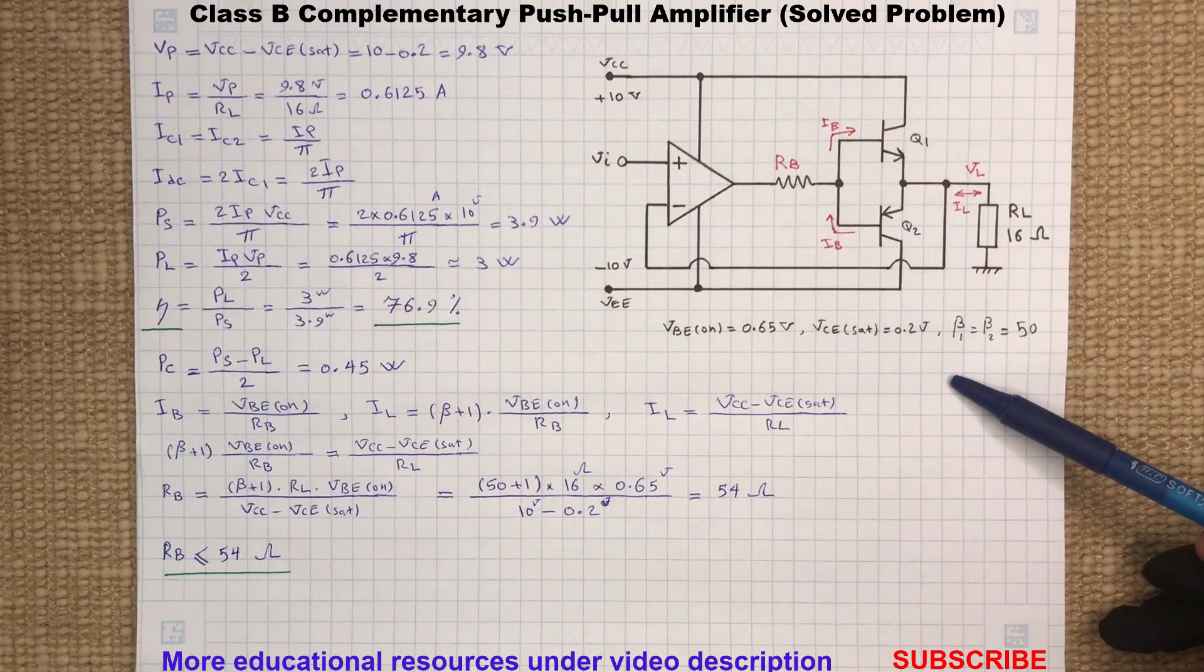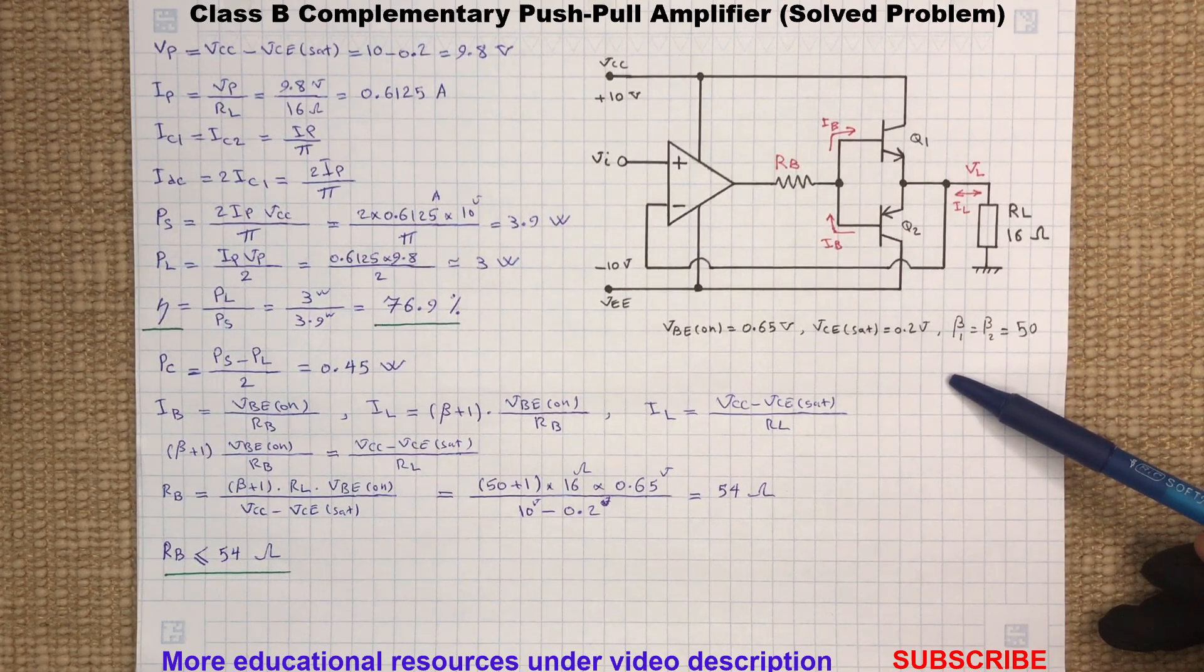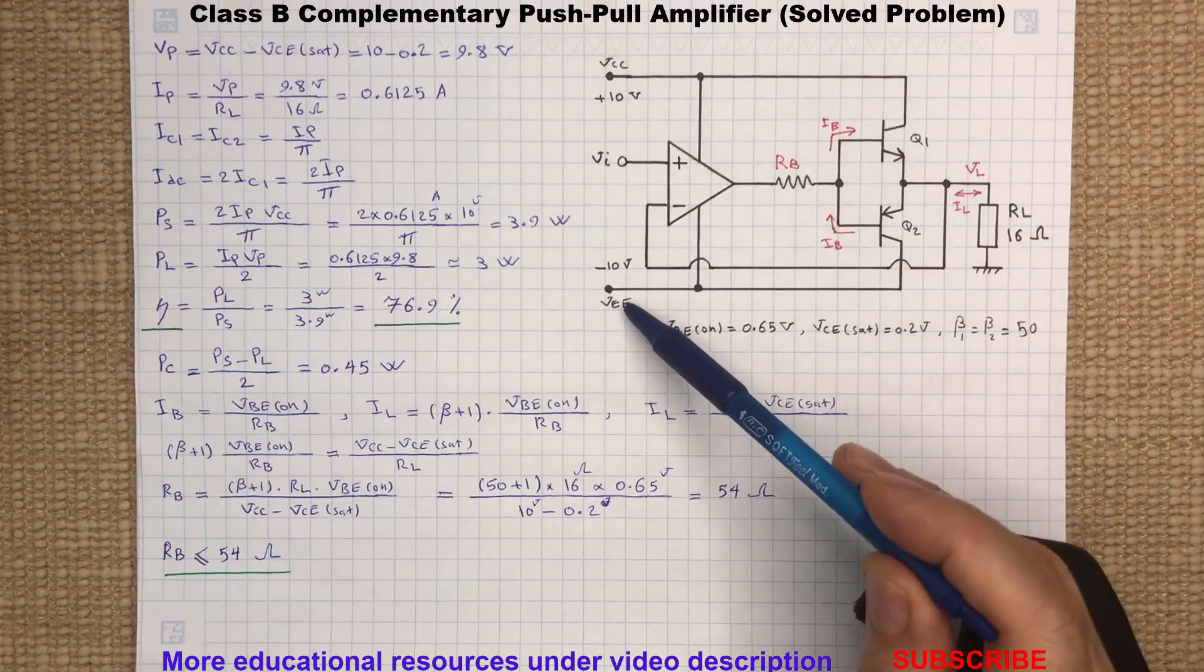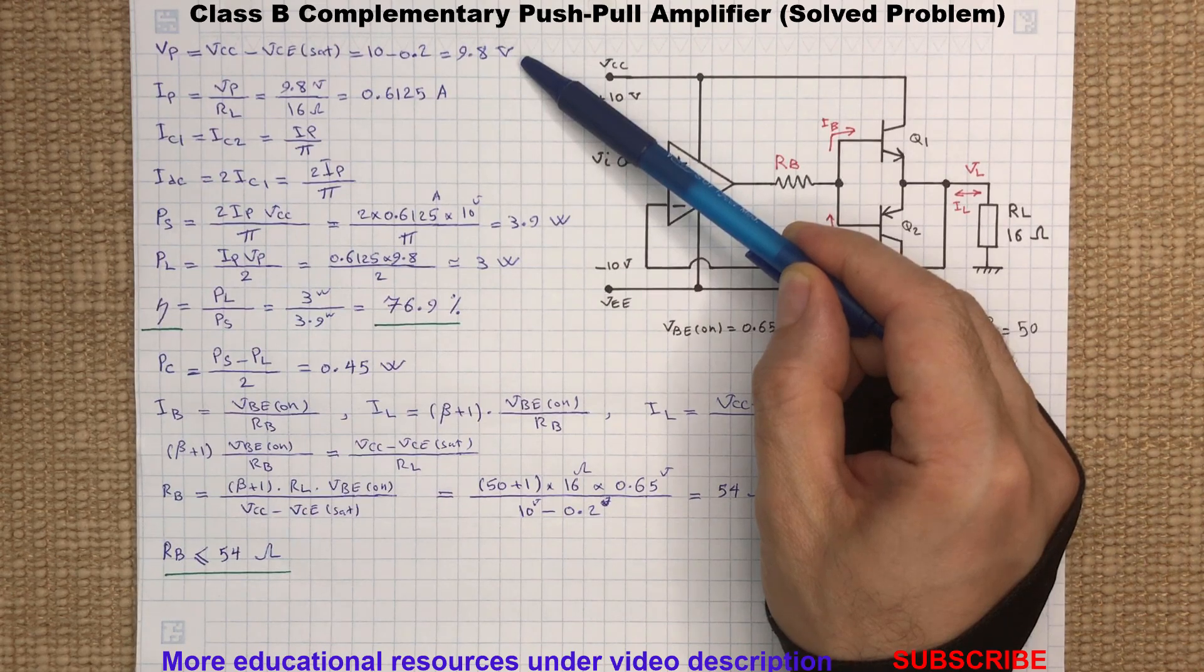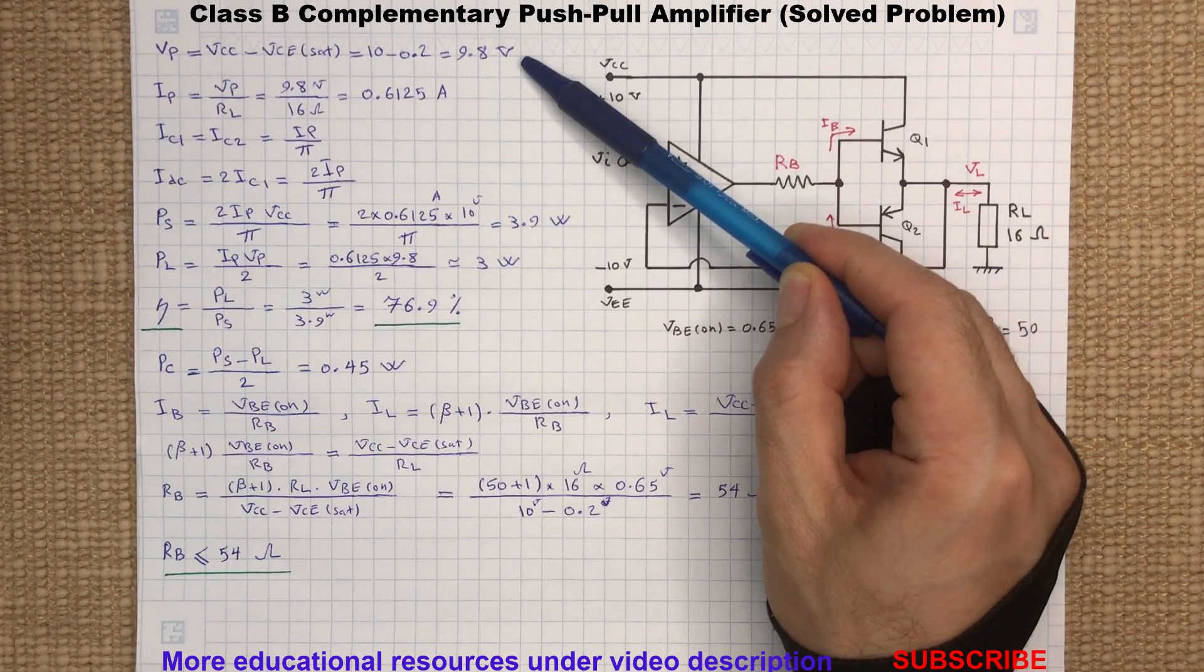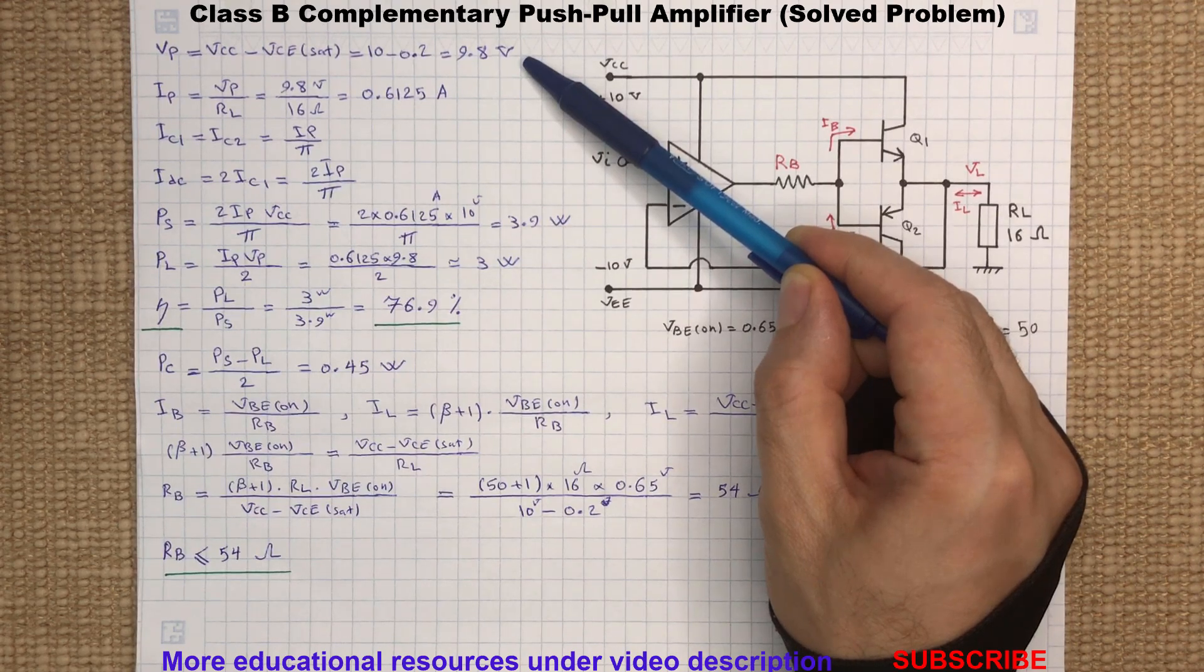To calculate the maximum power efficiency, first we need to determine the maximum peak voltage and current provided by the supplies. The maximum peak voltage across the load is the power supply voltage minus the transistor collector-emitter saturation voltage. This is the peak voltage due to positive input, and we have a similar value for negative inputs.